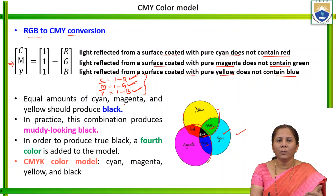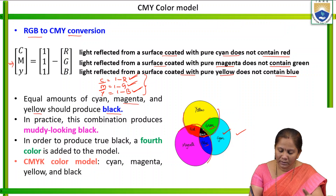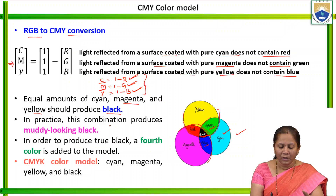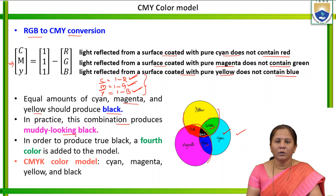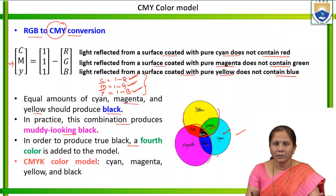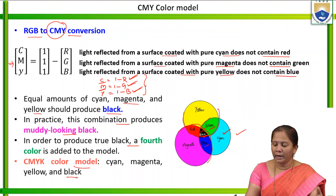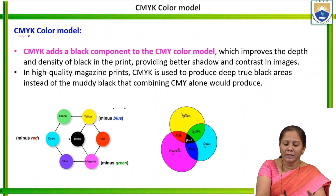If equal amounts of the secondary colors — cyan, magenta, and yellow — are mixed, it should produce black. If you see the common area, the color generated is black. However, in practice, this combination produces a muddy-looking black — it is not a pure black color. In order to get true black, a fourth color must be added to CMY. After adding that fourth color, the CMY color model becomes the CMYK color model.